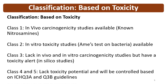Coming to the classification based on toxicity: Nitrosamines are classified as Class 1, 2, 3, 4, and 5. Class 1 impurities are also called known Nitrosamine impurities — like NDMA and NDEA seen in the previous table. These are small Nitrosamine impurities for which in vivo carcinogenicity studies are available, and they are known as known Nitrosamines.